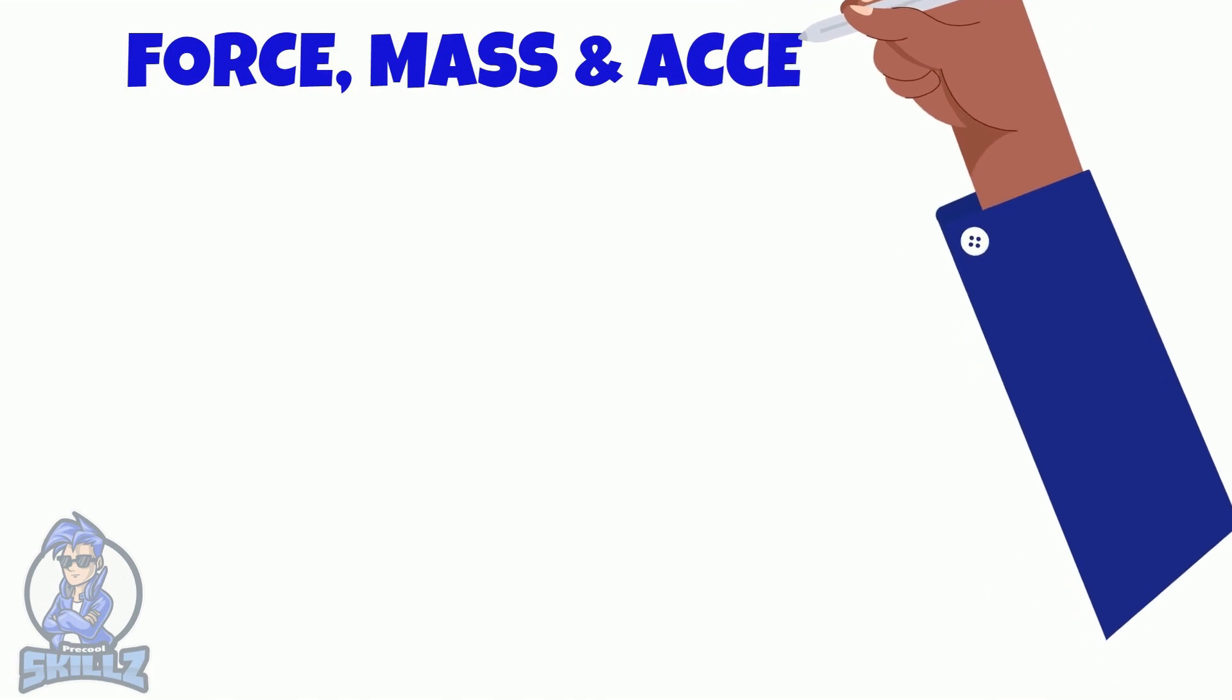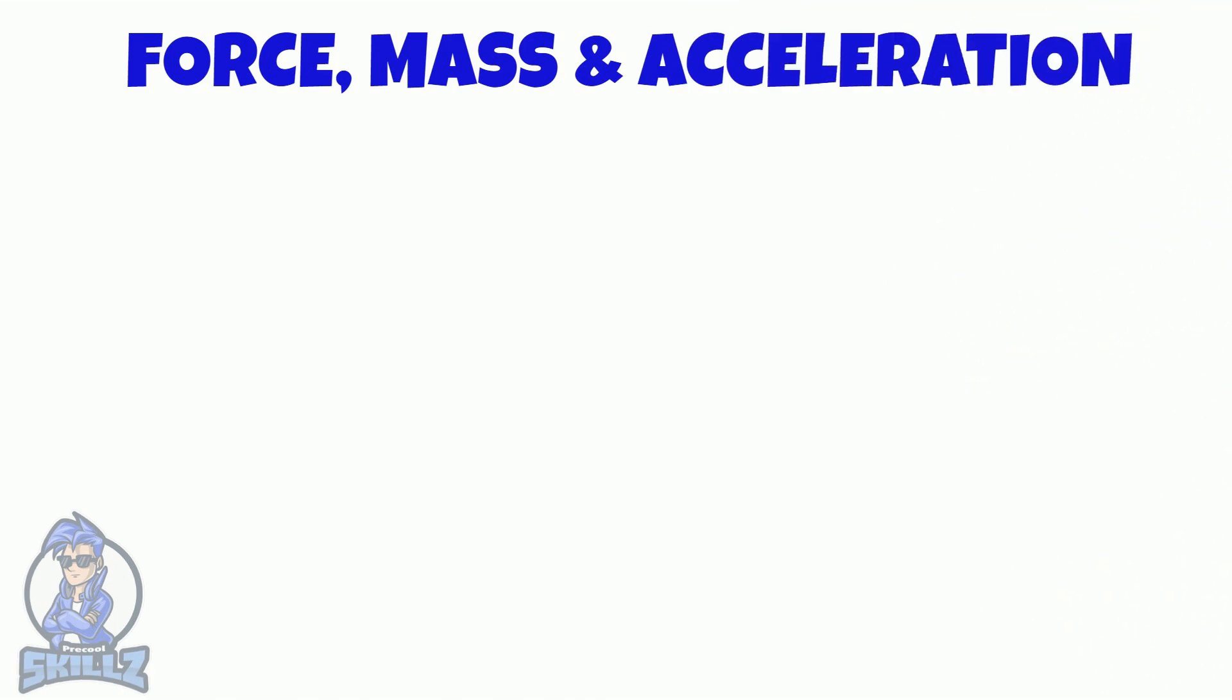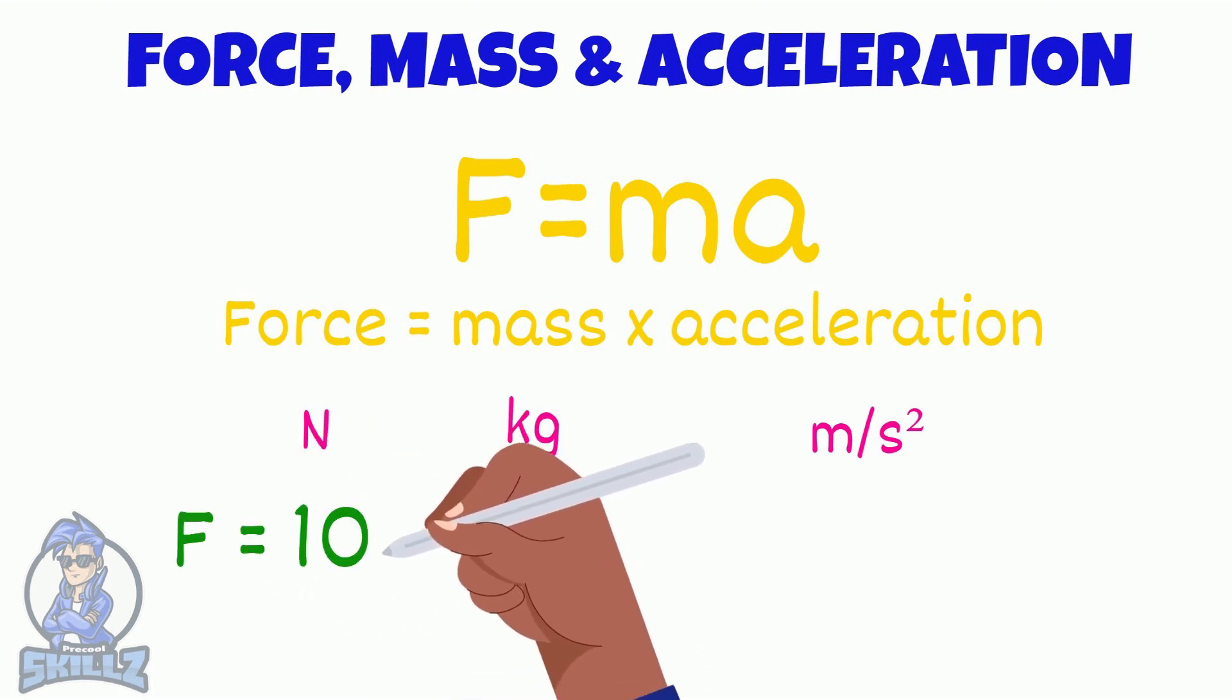Now let's see the equation that links force, mass and acceleration. F equals ma, force equals mass into acceleration. Before we move into another example, the units of force is newtons, mass is kilograms and acceleration is meters per second squared. So if an object has a mass of 10 kilograms and an acceleration of 2 meters per second squared, then the force that has to be applied would be 10 into 2 which is 20 newtons.